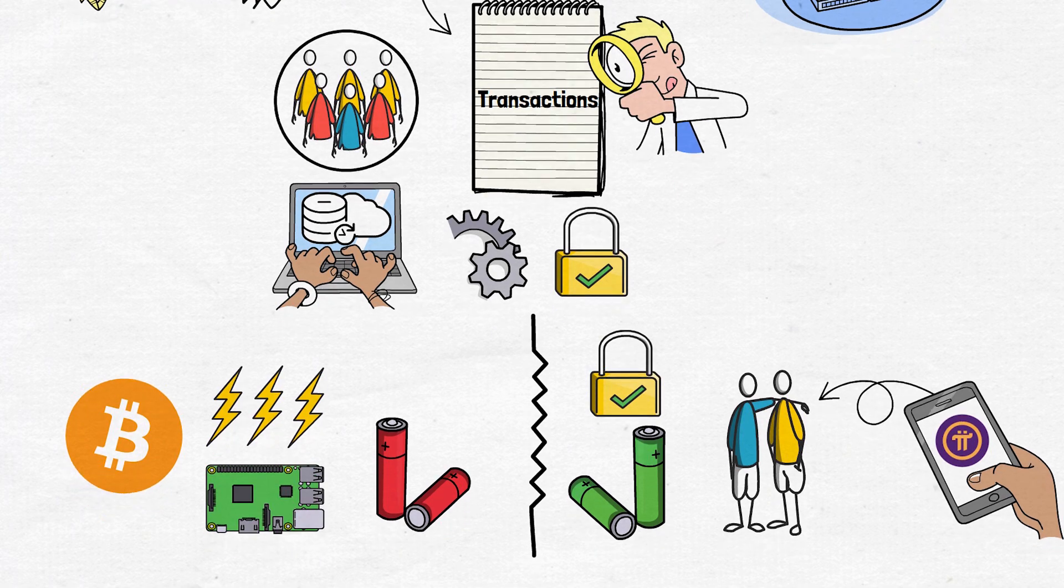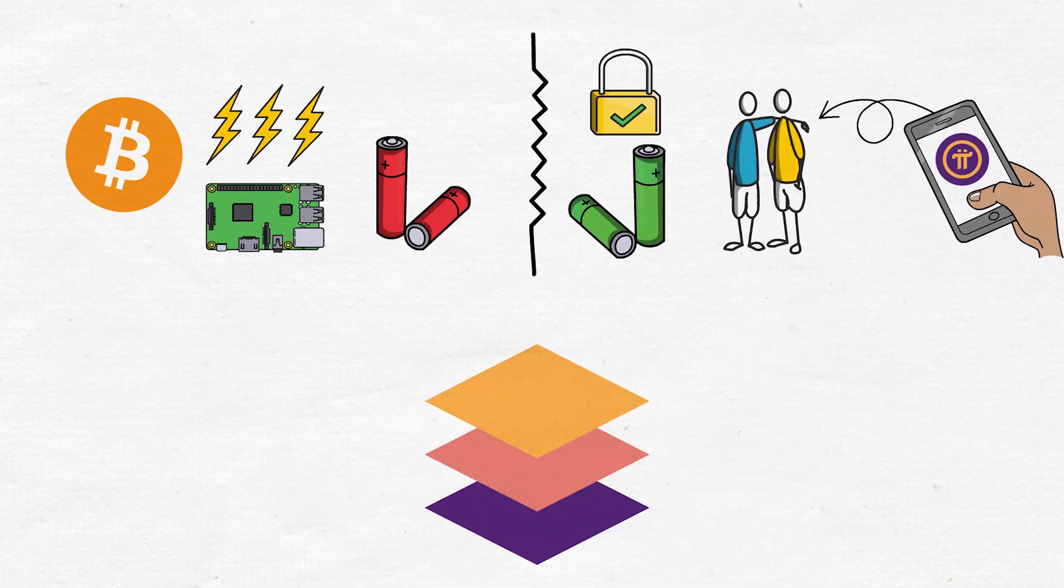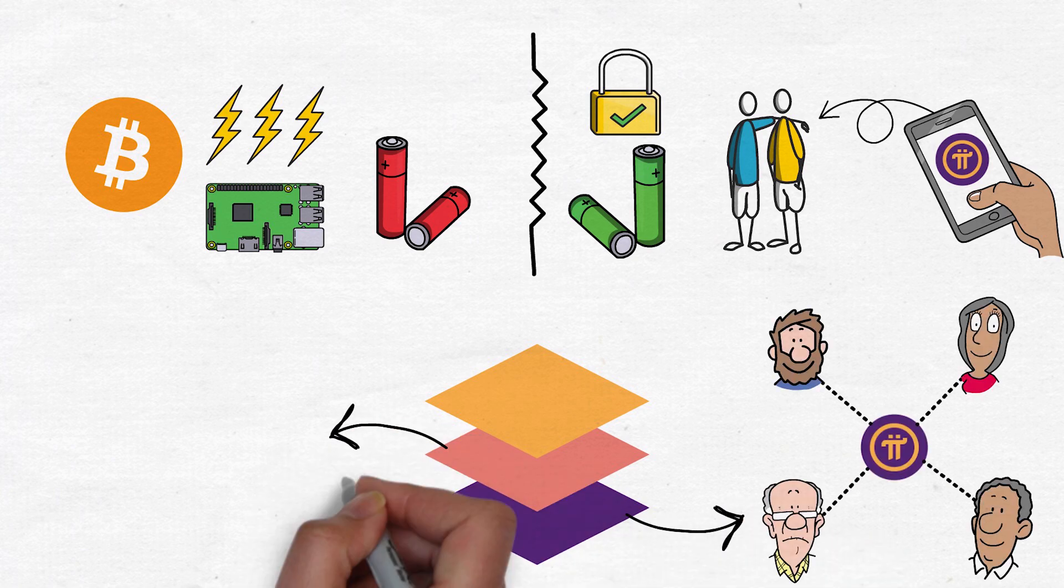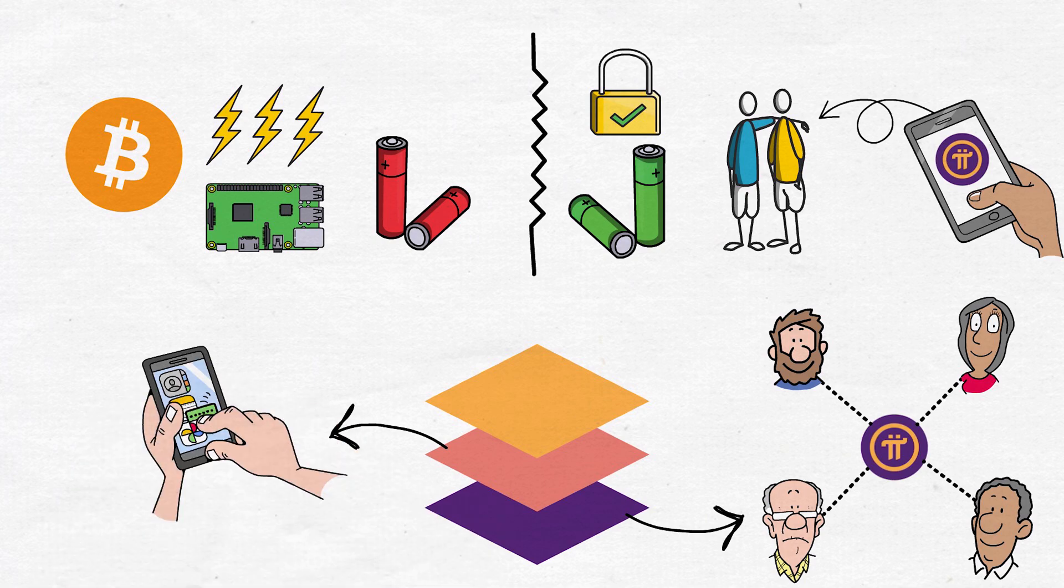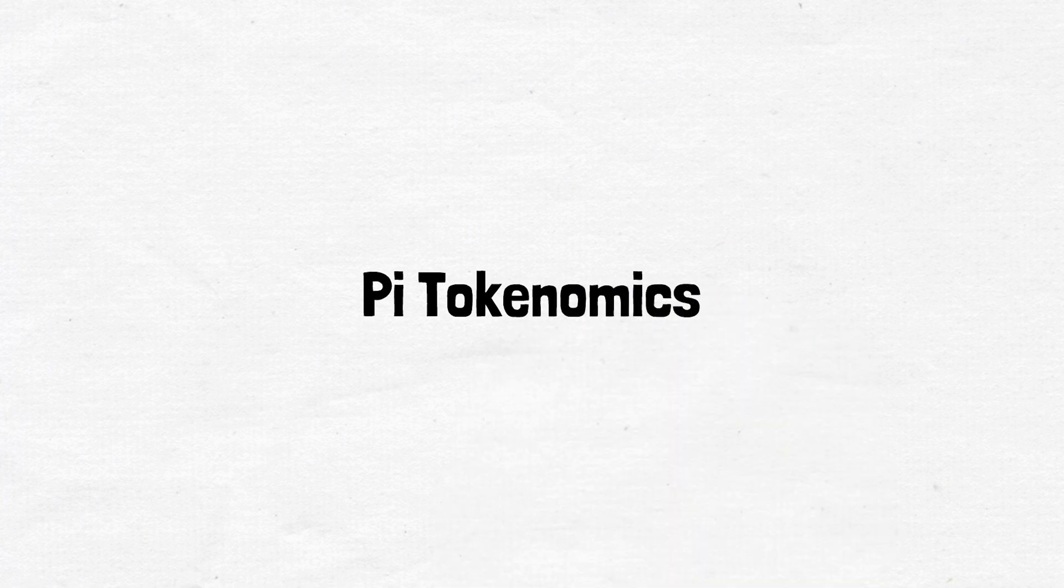Another interesting fact is how Pi uses its layered architecture. While the foundational layer ensures security and decentralization, additional layers power apps, marketplaces, and other use cases. Now that we know what Pi Network is and how it works, let's explore the tokenomics of the Pi token.